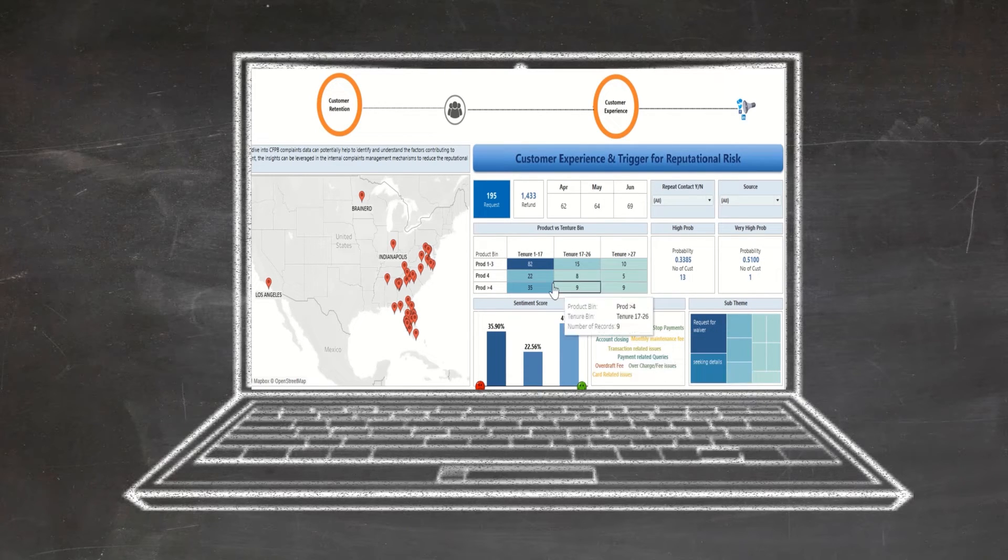High complaint volume from customers with tenure up to 17 months and owning up to three products. Complaints identified with medium to high probability of being escalated to regulatory authorities are communicated to Bank One for proactive redressal measures.